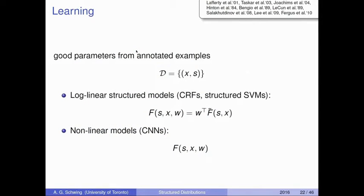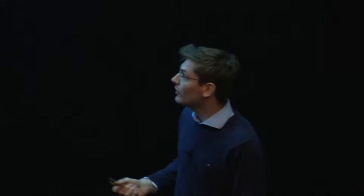That brings me to the second part of the talk where I try to answer the question of how to find the parameters W of our scoring function F. This is known as the learning problem, where we're interested in finding good parameters given a dataset D containing pairs of data X and corresponding ground truth annotation S. Looking at the literature, there are two types of approaches: log-linear structured models like conditional random fields or structured support vector machines, where F is typically this inner product between parameter vector W and some handcrafted feature vector. And particularly recently, nonlinear models like convolutional neural networks became very important, where F is a general and arbitrary scoring function.